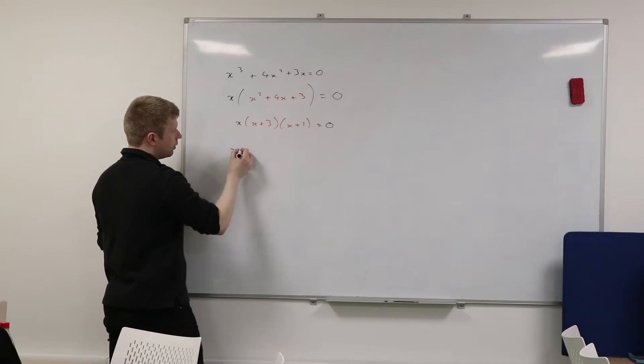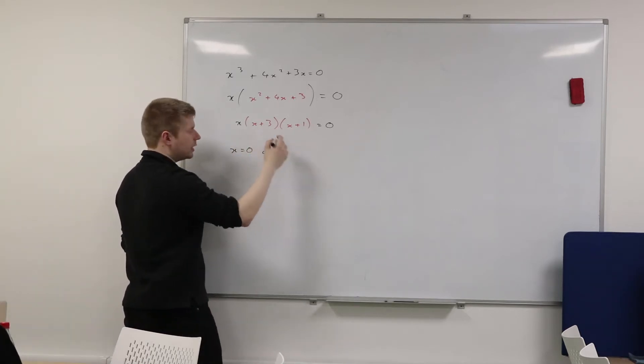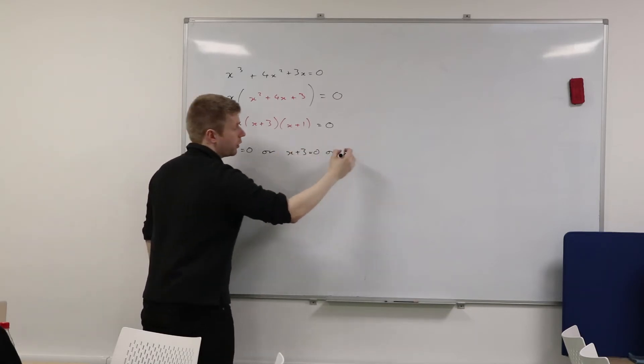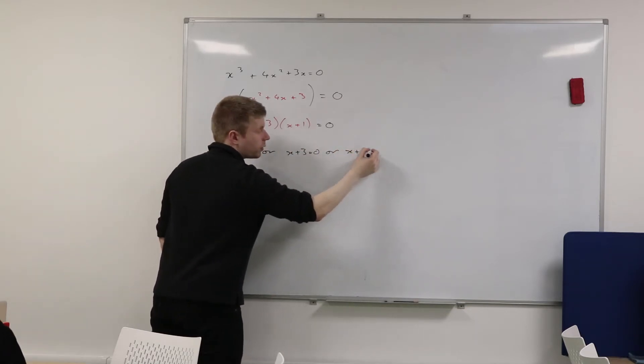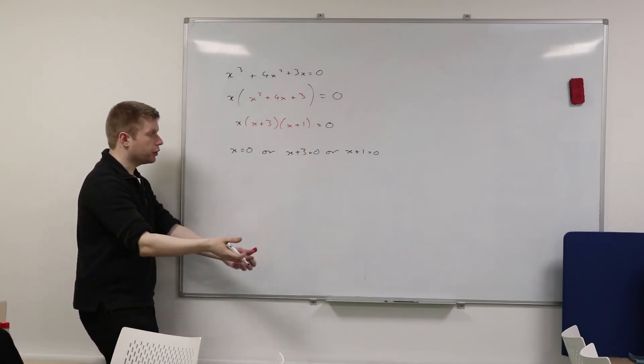So either, this equals zero. Or, this equals zero. Or, this equals zero. Okay? Now obviously x equals zero, there's your solution sitting there in front of you. You've got x equals something. That's your solution.